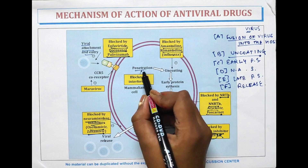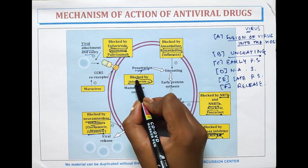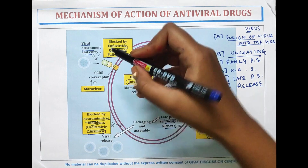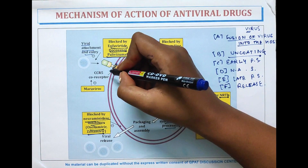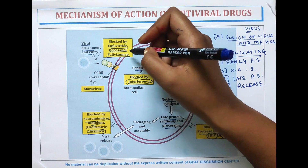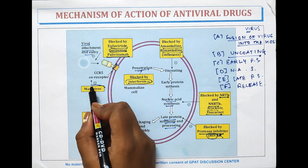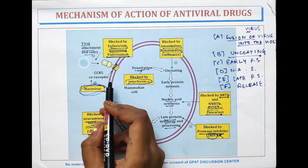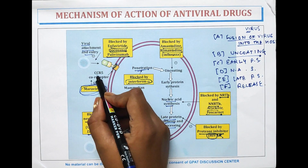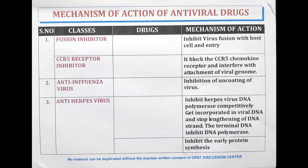The penetration of virus is blocked by interferon alpha. In the cell membrane, a CCR5 co-receptor is present which is blocked by maraviroc. Maraviroc is the drug which inhibits the CCR5 co-receptor.